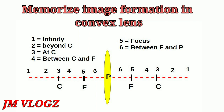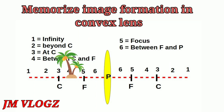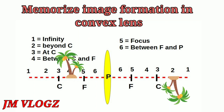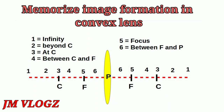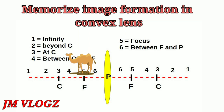Next, with the object between C and F, the number is 4. We take 6 minus 4, which gives 2, so the image is at position 2 — that means beyond C. Then we take position 5: 6 minus 5 equals 1, and position 1 is at infinity, so the image is at infinity when the object is at focus.